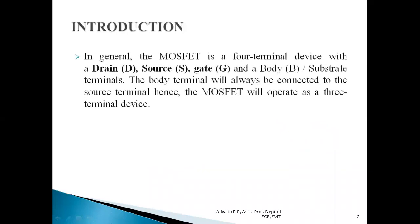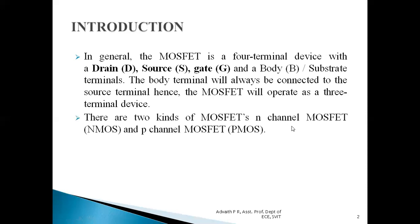In general, the MOSFET is a four-terminal device with a drain terminal, source terminal, gate terminal, and a body terminal, which is also called a substrate terminal. Normally, because the body terminal of the MOSFET is always connected to the source terminal, we consider the MOSFET as a three-terminal device consisting of drain, source, and gate. But in reality it is a four-terminal device; the fourth terminal is called the substrate.